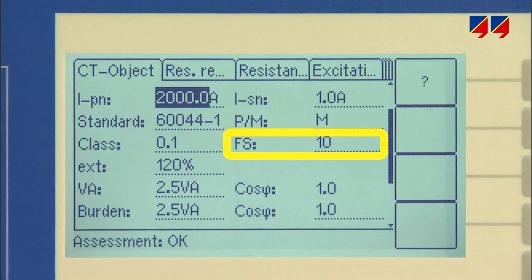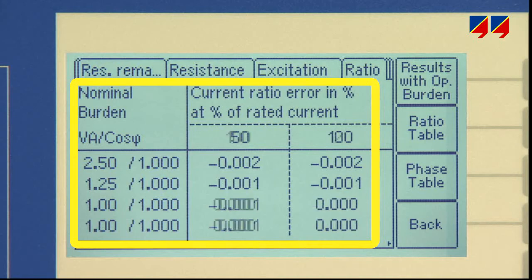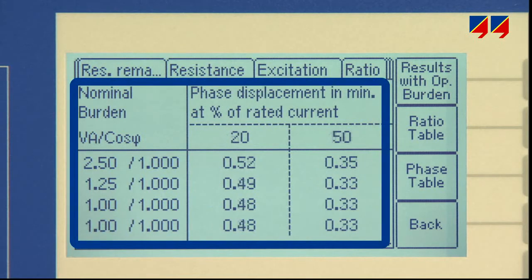It shows the instrument security factor at the actual burden, verifying the meter's protection against overcurrent. Amplitude and phase error can also be calculated for any combination of primary current and burden required by the user.